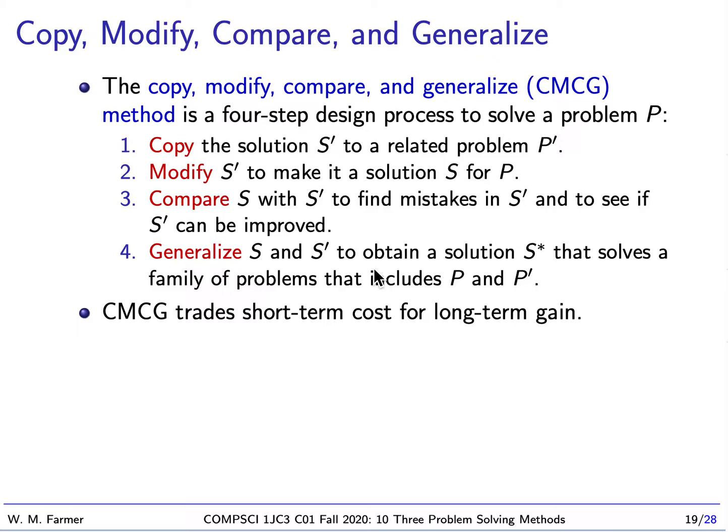So this method is a three or four step design process. You have a problem you want to solve. Let's call that problem P. You want to solve P, so you copy the solution to a related problem. So let's say P is I would like to write a letter to someone who I would like to be hired by.